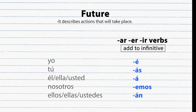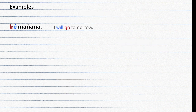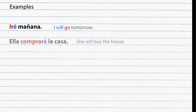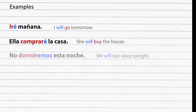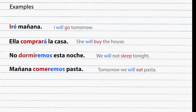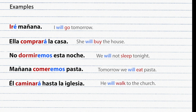Future tense describes actions that will take place. Unlike other tenses, the future tense uses the entire infinitive as the stem. Examples: I will go tomorrow. She will buy the house. We will not sleep this night. Tomorrow we will eat pasta. He will walk to church.